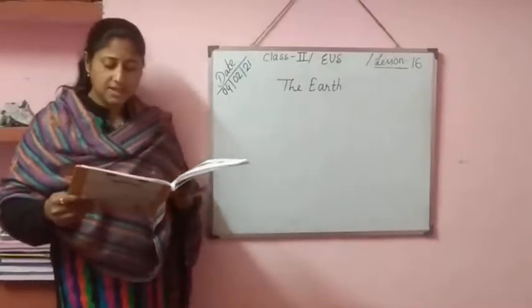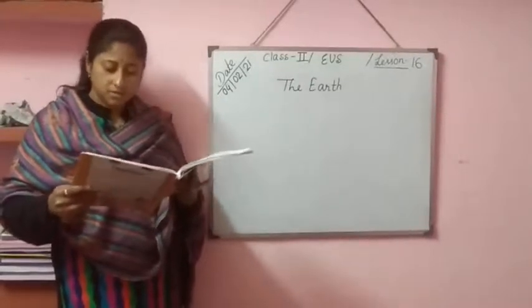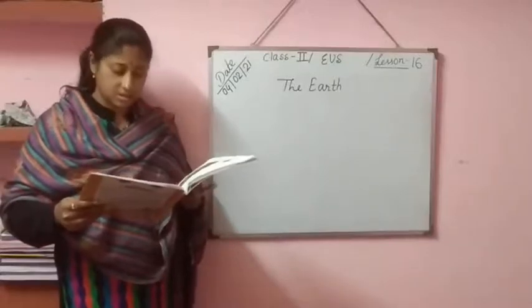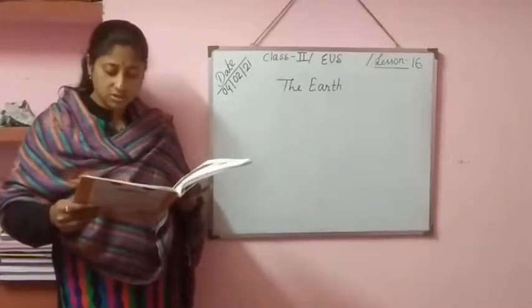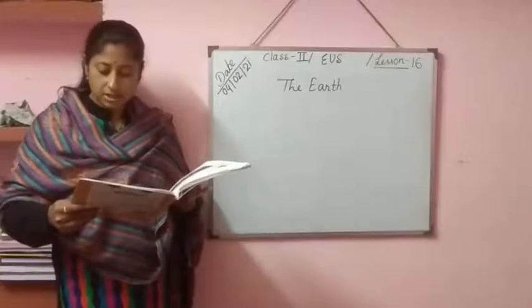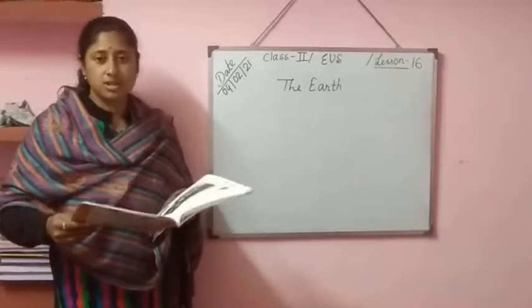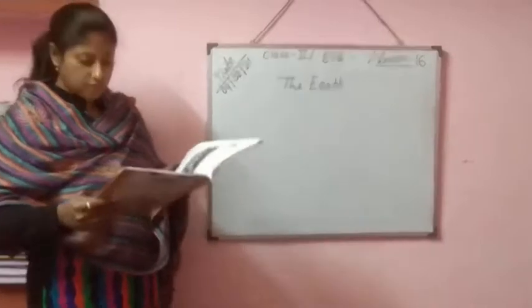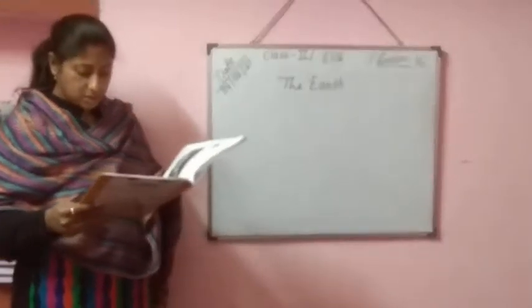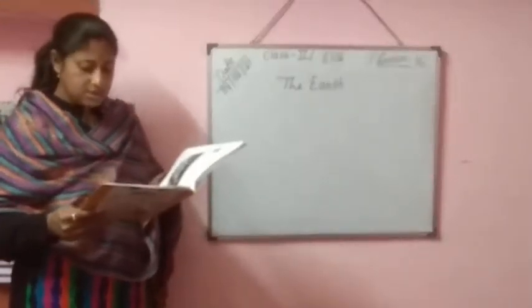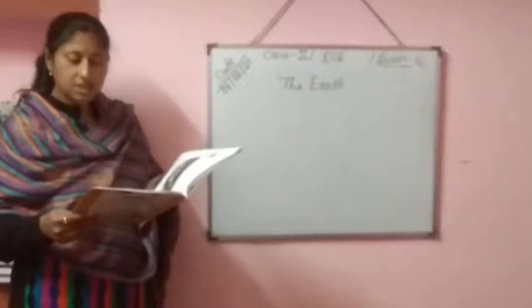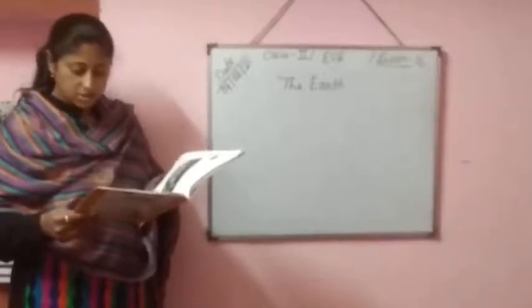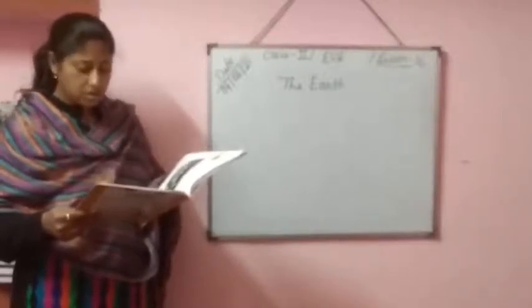Ocean. Oceans are the largest water bodies on the earth. This consists of salt water.